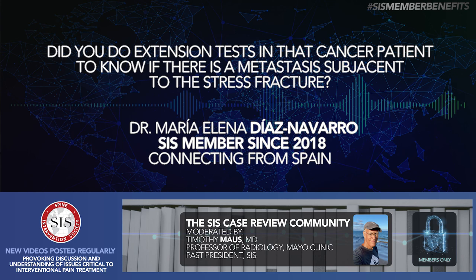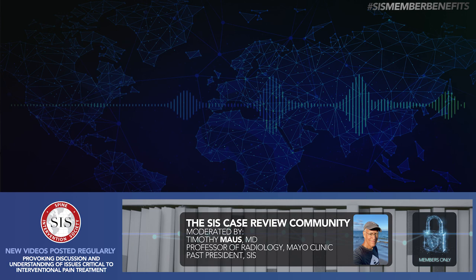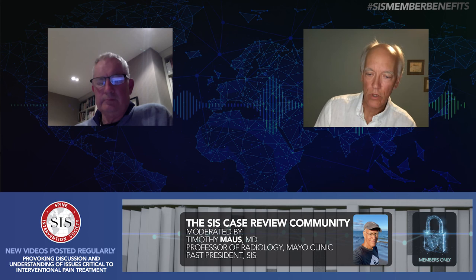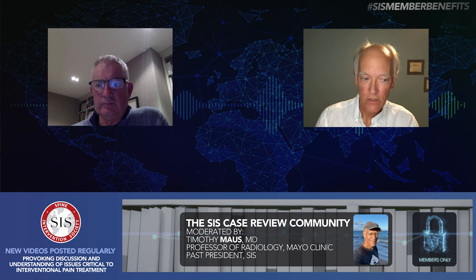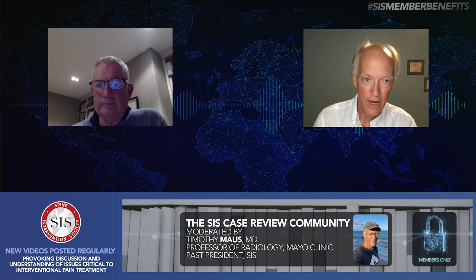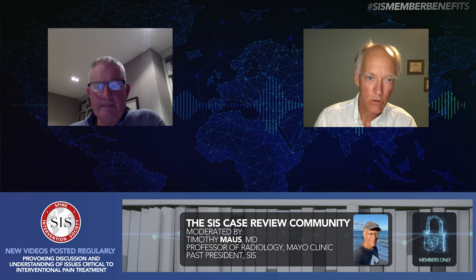Question from Maria: did you do any testing in that cancer patient to know if there is metastasis adjacent to the stress fracture? Coexistence of metastatic disease and sacral insufficiency fractures is always possible, but you'd like to hone in on a single unifying diagnosis. That's part of the challenge — 45 percent of these patients have a known underlying cancer diagnosis. We have to be thoughtful about making this diagnosis to keep them from going down an inappropriate biopsy pathway or delaying diagnosis, because these findings were pretty clear cut from a diagnostic standpoint.